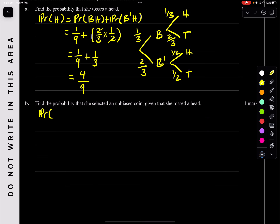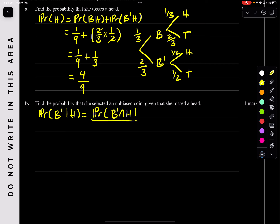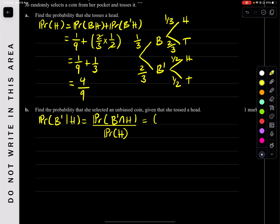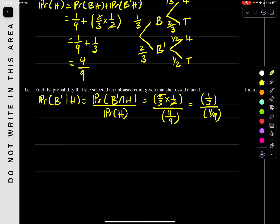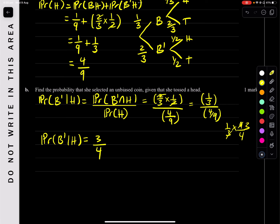Find the probability that she selects an unbiased coin given that she tosses a head. That's P(unbiased intersection H) over P(H), which is (2/3)(1/2) all over 4/9. That's 1/3 divided by 4/9, which equals (1/3)(9/4), giving 3/4.